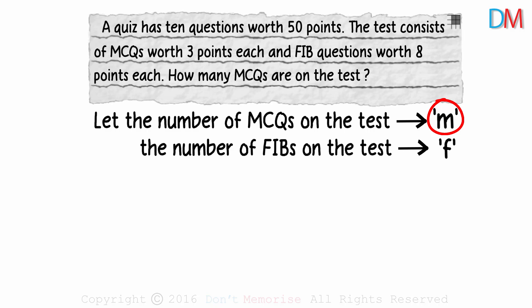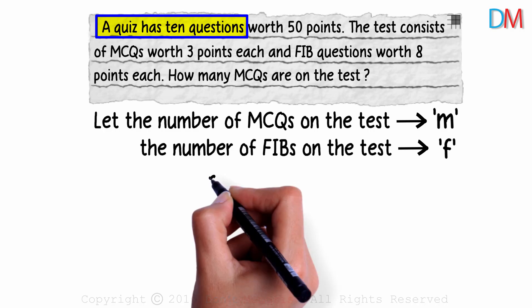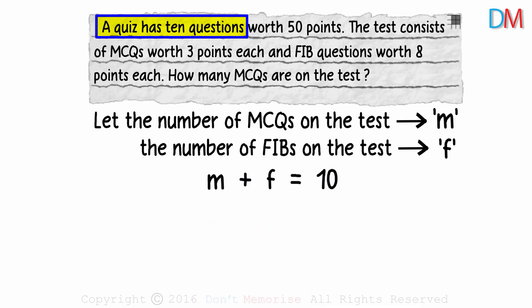Let's break the information down. What does the first line tell us? The quiz has 10 questions in total. What will that mean in terms of M and F? Come on, you should be able to answer this. It tells us that M plus F will equal 10. Sum of MCQs and FIBs will equal 10, because these are the only two types of questions in the quiz.